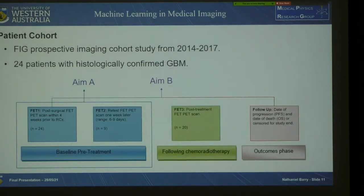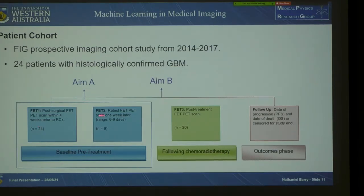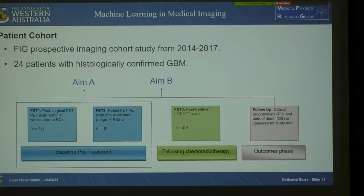Our patient cohort came from a FET and glioma prospective imaging cohort study which recruited patients from 2014 to 2017, and we ended up with 24 patients with histologically confirmed glioblastoma multiforme. Every patient underwent a baseline post-surgical FET PET scan before radio-chemotherapy, and nine of those patients had a retest scan around one week later. Those nine patients with their test and retest scans constitute the data for Aim A, while the baseline scan with follow-up overall survival data constitutes the data for Aim B.